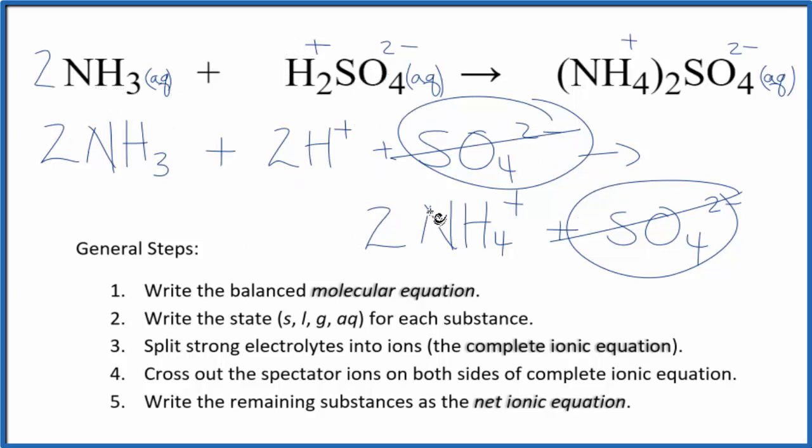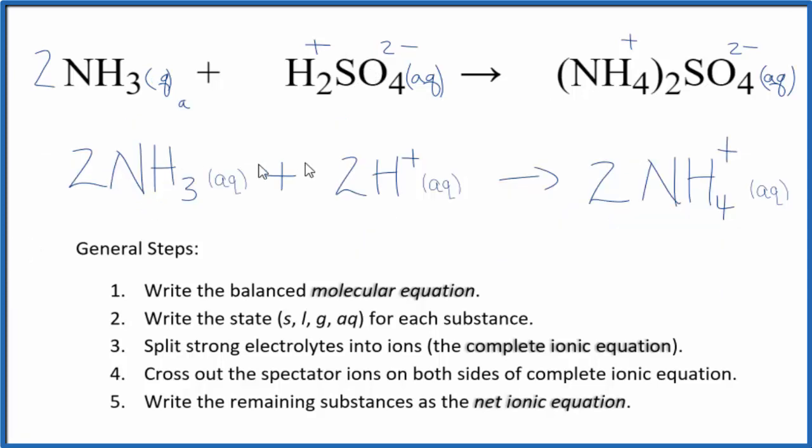I'll clean it up and add the states. We'll have our net ionic equation. So this is our net ionic equation for ammonia plus sulfuric acid. We have the coefficients as 2, 2, and 2. So we can reduce that down to 1, 1, 1. We don't write the 1s, though, by convention.